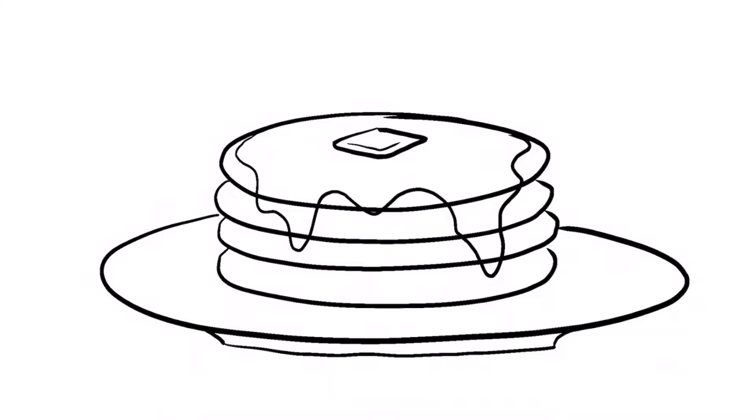To add some more detail, draw two very thin C shapes on the plate, and some very thin lines on each of the pancakes following the curve.